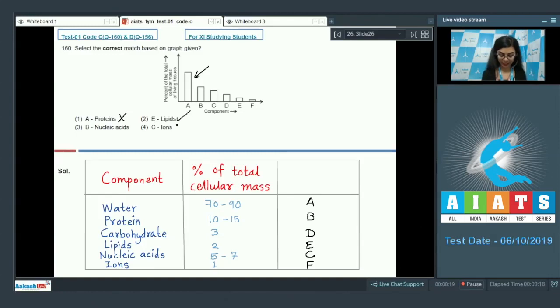E is lipids. That's correct. B, protein. That's incorrect because it says nucleic acids here. And C would be nucleic acid but it gives ions here which is represented by F here. So that is also incorrect. The correct option here would be option number 2, E, lipids. Answer is 2.